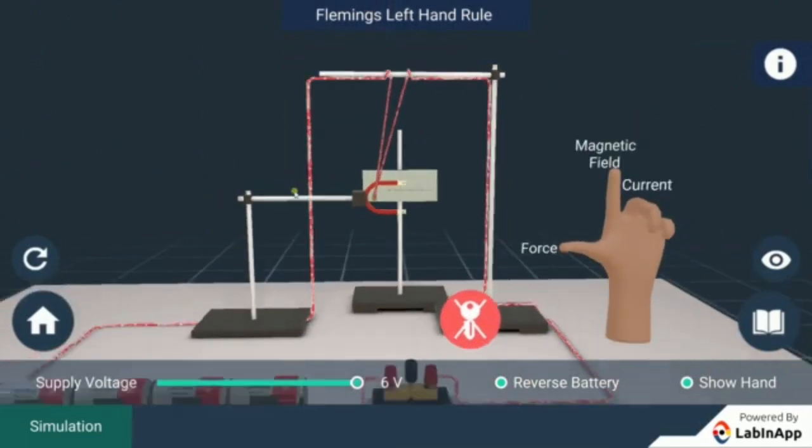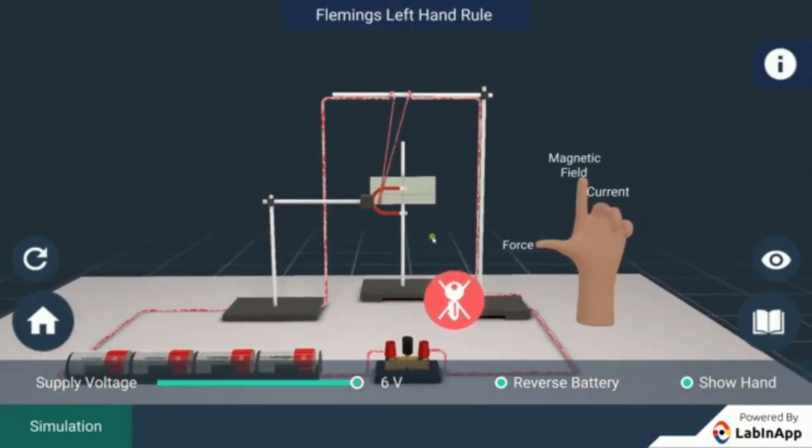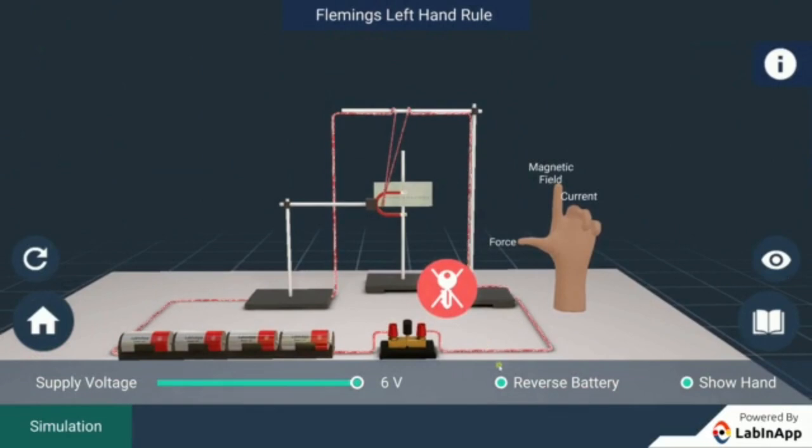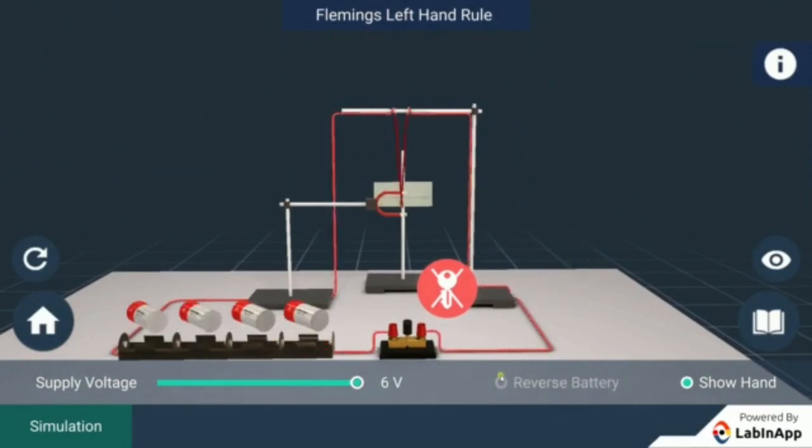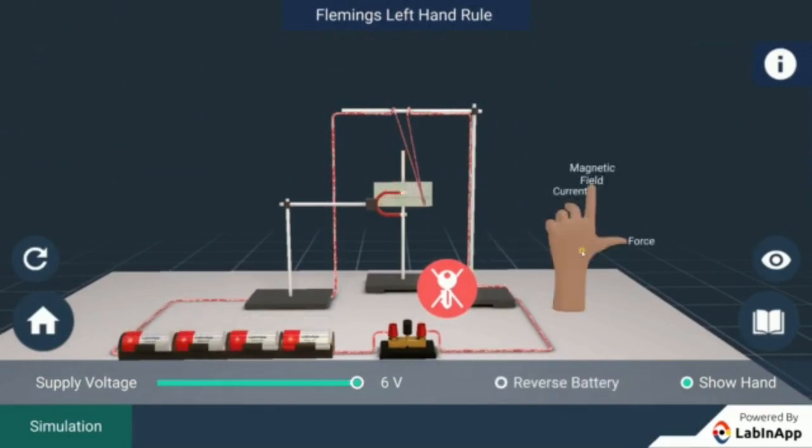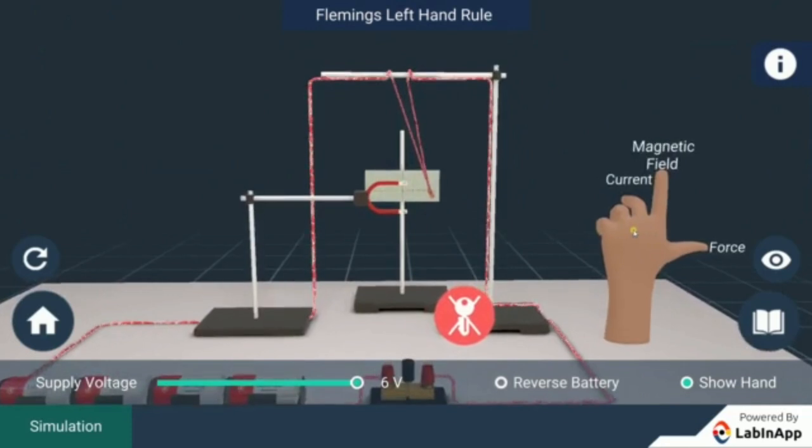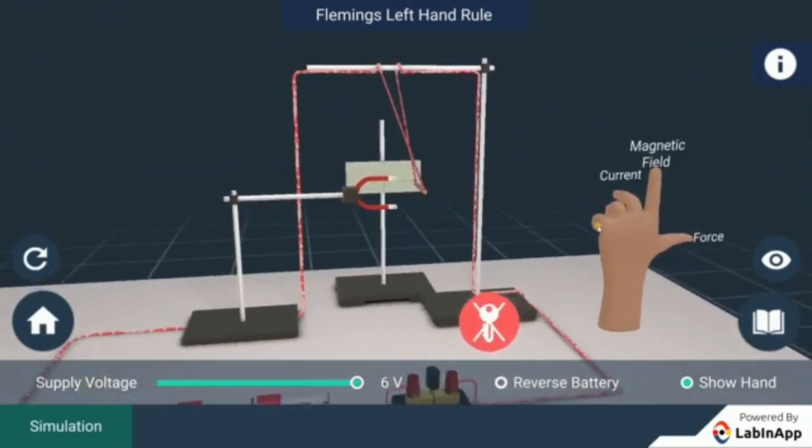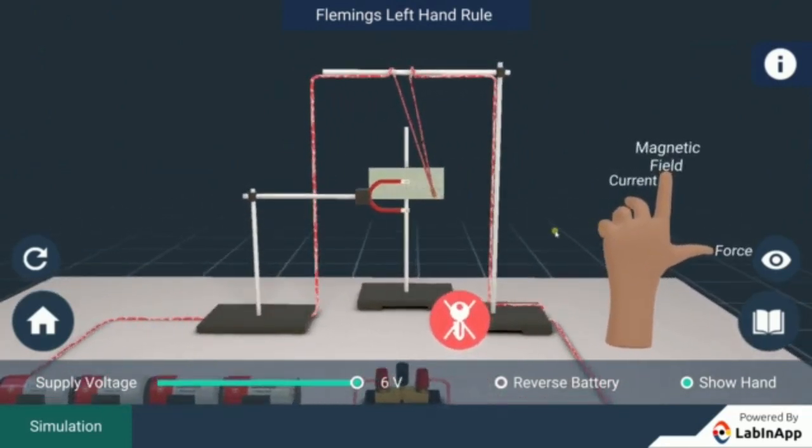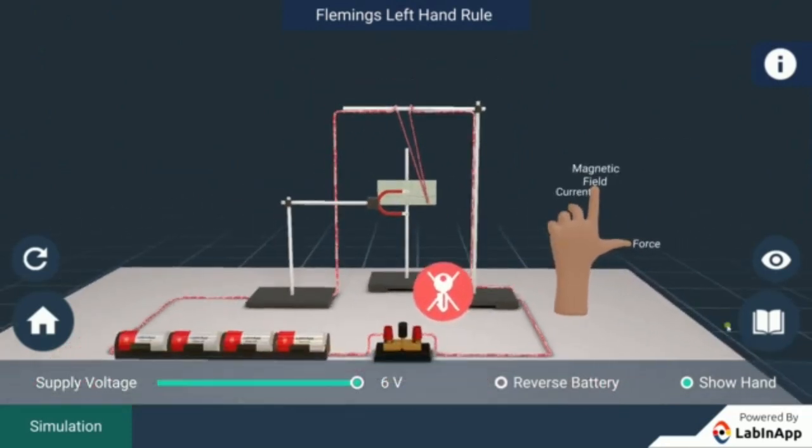Now if you reverse the direction, the current becomes inside. We will reverse the direction - you can see the cell is reversed. Now this wire becomes outside. Current is inside, magnetic field is still upwards, and force is outside.